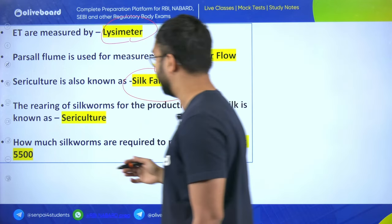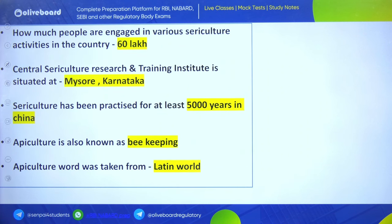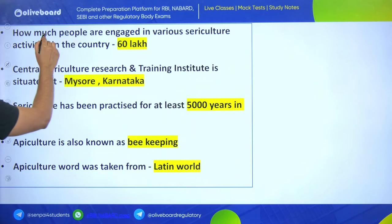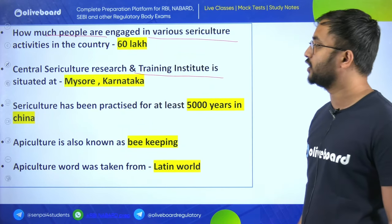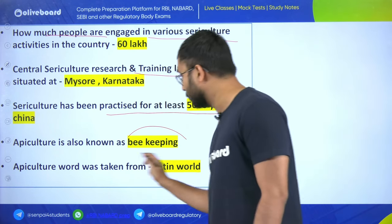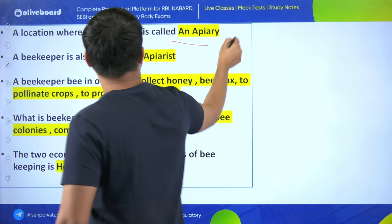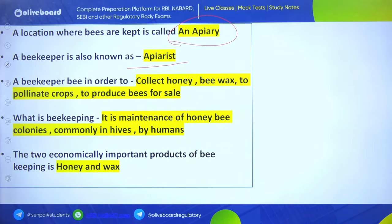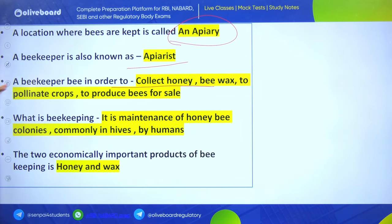5,500 silkworms are required to produce 1 kg of silk. 60 lakh people are engaged in sericulture activities in India. Central Sericulture Research and Training Institute is situated at Mysore. Sericulture has been practiced for at least 5000 years in China. Apiculture is also known as beekeeping. Location where bees are kept is called apiary. A beekeeper is called an apiarist.